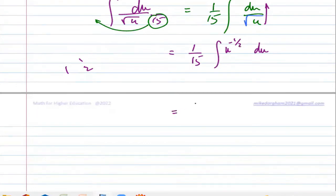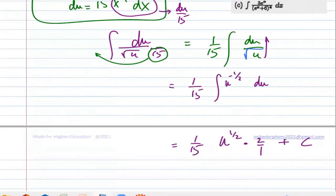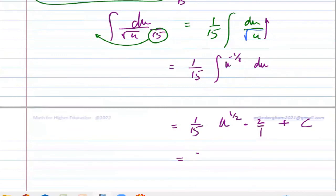So the answer would be one over 15, u power half, divide by half, which means times two over one. The answer should be written properly without fractions. This is your answer. Now you go back to how much was u—you put it back. Your answer should be in x, so the final answer should be 2 over 15, the bracket 3x^5 minus 2 to the power half.